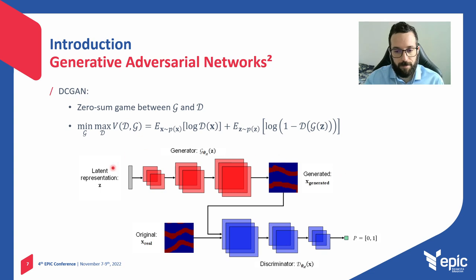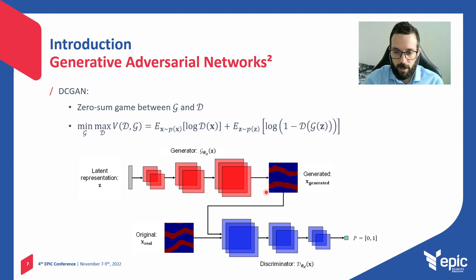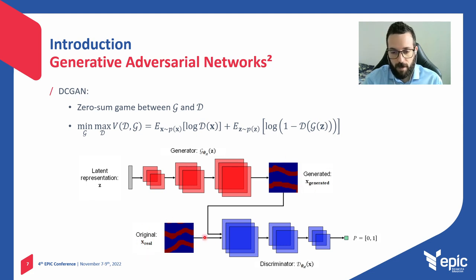Here is another image representing the adversarial training. We have the generator and the discriminator. The generator takes a random vector — a latent representation — and tries to generate samples. The generated samples and the original ones are taken as input to the discriminator, which tries to classify the samples as real or fake.